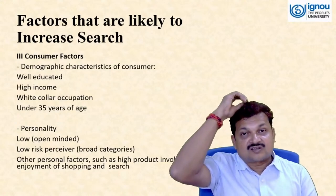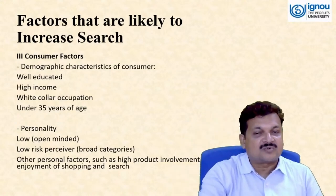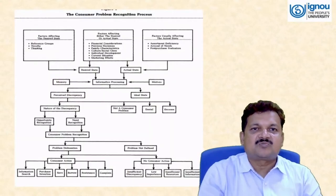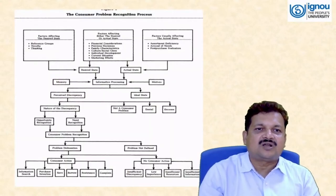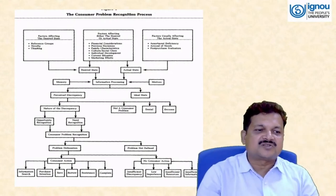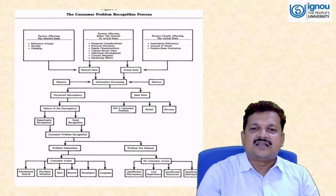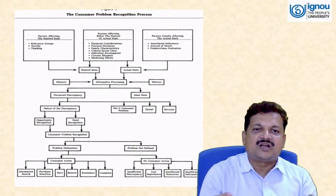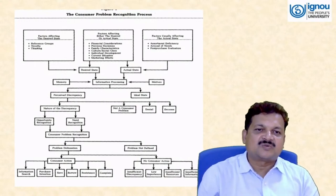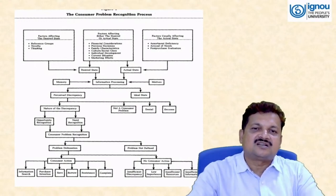The consumer problem recognition process involves the desired state versus the actual state, information processing through memory and motives, and perceived discrepancy — once the discrepancy is perceived, there is a change that leads toward the buying process.